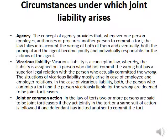Now, the circumstances under which joint liability arises are: agency, vicarious liability, and joint or common action. Agency means when a principal assigns work to an agent and the agent does that work in the course of his employment, and out of doing that work a tort is committed, then both the principal and agent would be considered joint tortfeasors. In vicarious liability — like an employer-employee relationship — if the employee is assigned work by the employer in the course of employment and the employee does that work, then the employer would also be liable, and both would be considered joint tortfeasors. In joint or common action, when one person incites another person to do an act, both would be considered joint tortfeasors.